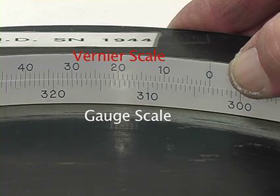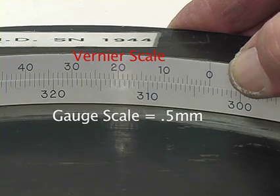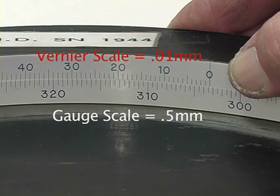Each line on the gauge member represents 0.5 millimeters, while each line on the vernier scale represents 0.01 millimeters.